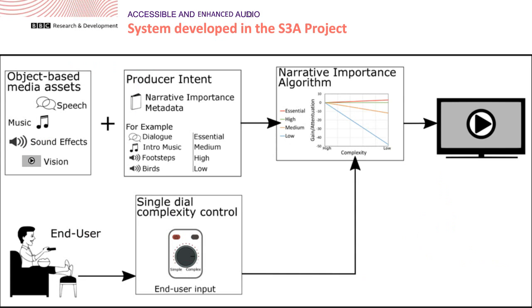This is diagrammed as an overview of the system. The narrative importance idea is encased in a narrative importance algorithm. We start with object-based media assets — speech, music, sound effects — then add narrative importance metadata that tells us how important each audio object is. Those combined are then used during playback: the end user has a single slider which allows them to adjust the complexity of the audio mix. Depending on which narrative importance level each audio object is in, different amounts of attenuation or gain are applied as you move the slider.